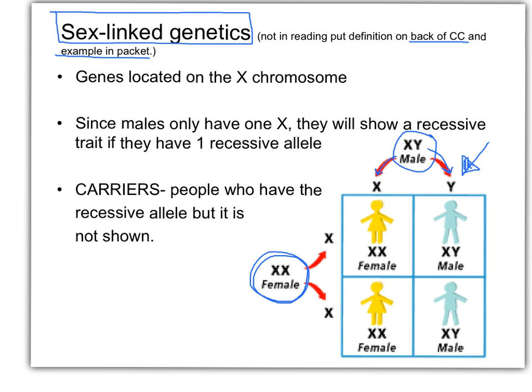When he goes to make sperm, half of his sperm will have an X and half will have a Y. With the female, half of her eggs are going to have one of her X's and the other half the other X. When you look at the Punnett square, it shows you what your outcomes are going to be. Some important things to note: the Y chromosome is really, really small, and because it's small, there's not a lot of DNA base pairs, meaning there's not a lot of genetic information.